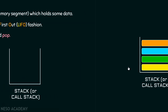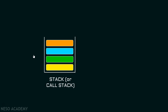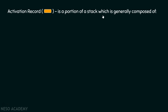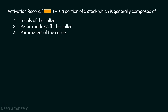For simplicity, I told you that the function itself gets stored in the call stack. But in reality, it is the activation record of the function which is maintained inside the call stack. An activation record is a portion of a stack generally composed of: locals of the callee, the return address to the caller, and parameters of the callee. It is a small chunk of the stack containing all local variables of the called function, the return address so the compiler knows where to go after completion, and the function's parameters.